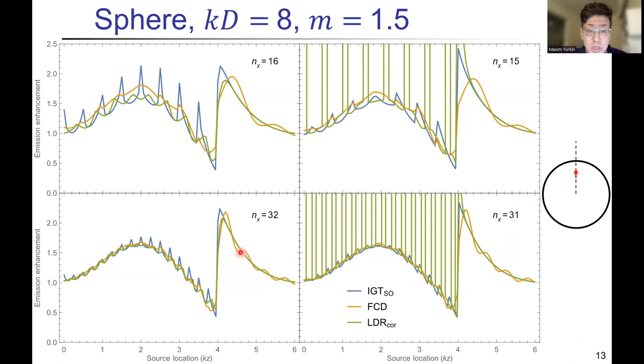When we refine discretization, the same good things happen. Also important to note that for FCD, it's overall smooth, but you clearly see this Gibbs phenomenon near the boundary, and oscillations afterwards. For LDR, the point dipole after correction can actually be the best inside the particle. But on the boundary, IGT is probably the best one because it shows the sharp boundary as it should be from the boundary conditions.